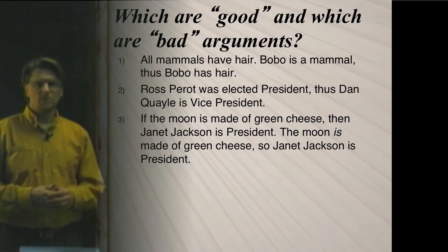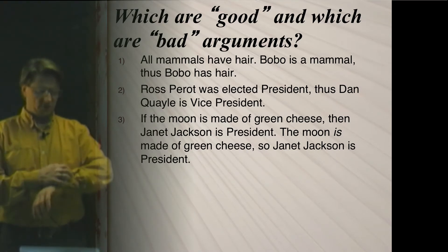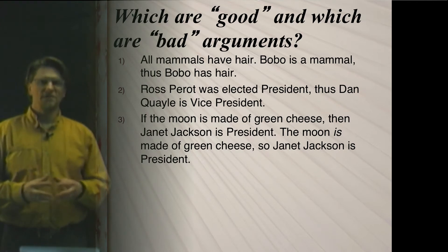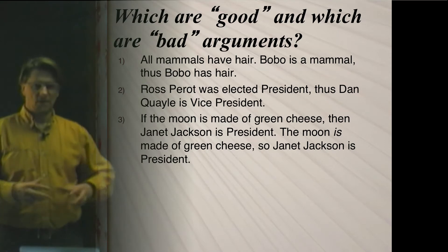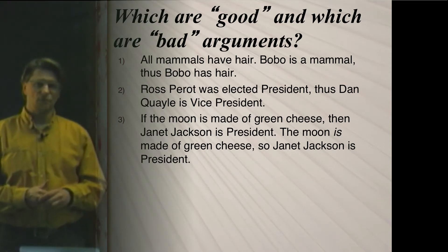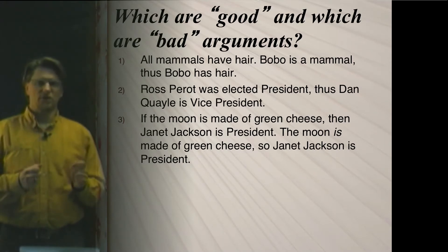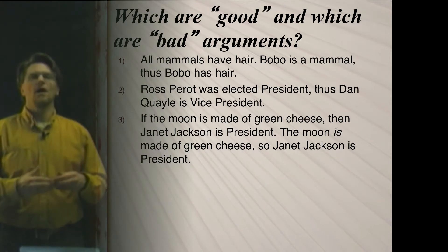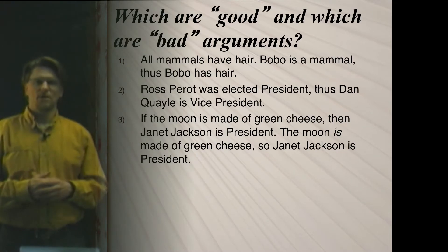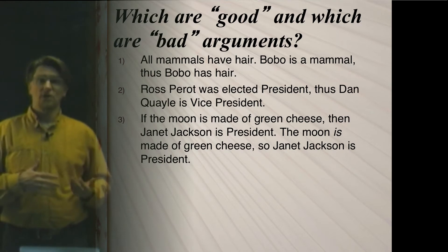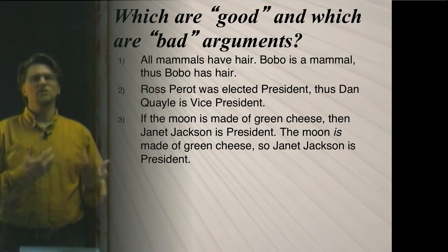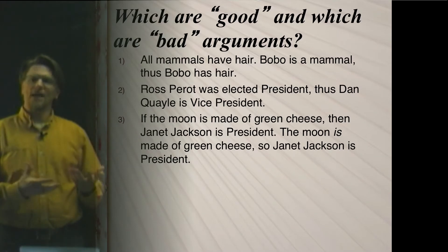We also have an important argument: if the moon is made of green cheese, then Janet Jackson is president. The moon is made of green cheese, so Janet Jackson is president. This one actually does fit into one of the argument types from 1.3. The key word here is 'if' — when an argument has an if-then statement as one of the premises, we say it is a hypothetical syllogism, and that's what this is. Now, thinking about this argument, it's obviously very strange and full of falsehoods, but at the same time, a lot of people tend to think there is still something good about it. We'll come back to that thought in a little bit.